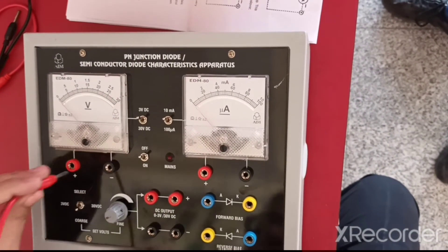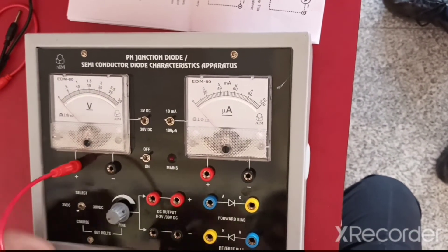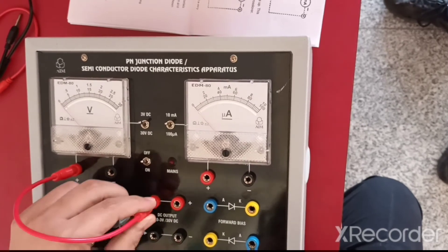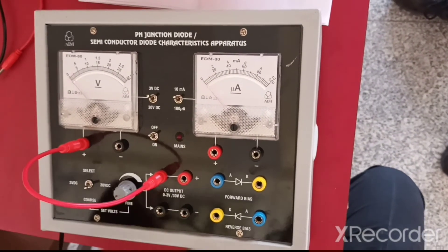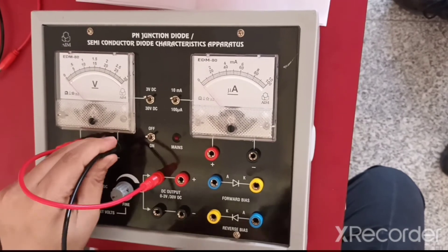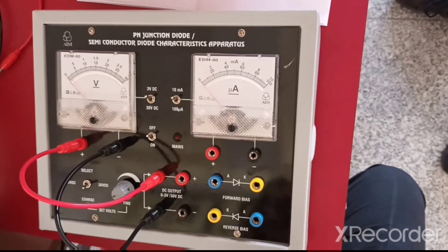So first of all, positive of the voltmeter should be connected with the positive of this battery, and negative of the voltmeter should be connected with negative of the battery.